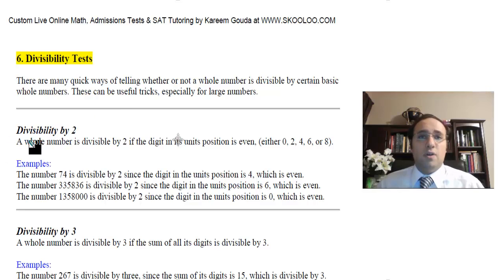First of all, how do I determine if a number is divisible by 2? A whole number is divisible by 2 if the digit in its units or ones position is even. So in the ones position, if you have a 0, or a 2, or a 4, or a 6, or an 8, then this is a number that is divisible by 2. So the number 24 is divisible by 2 because it ends in 4. The number 38 is divisible by 2 because it ends in 8. The number 60, for example, is divisible by 2 because it ends in 0.